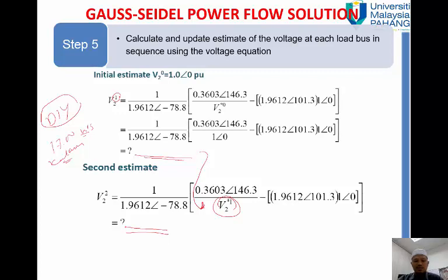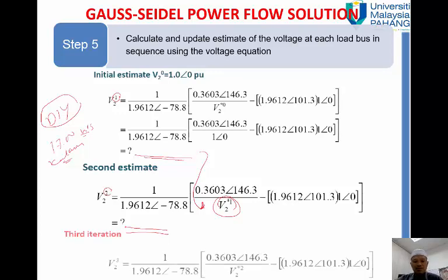Okay, and then this is the second iteration, and then for the third iteration this V2 is using this value. So please do this one by yourself.